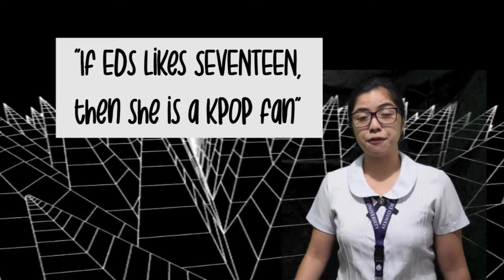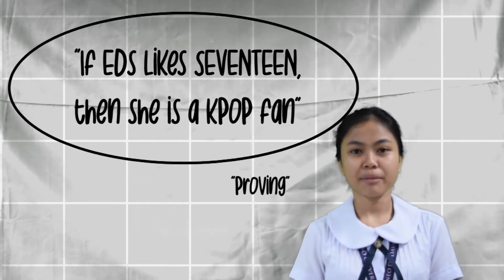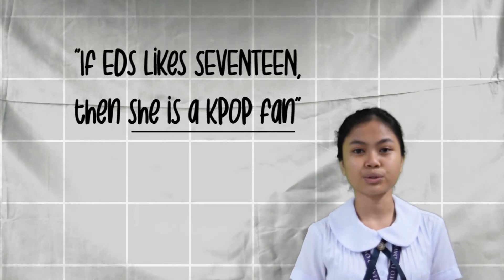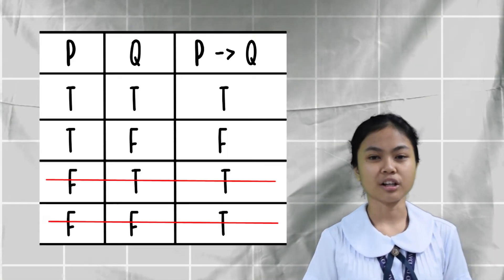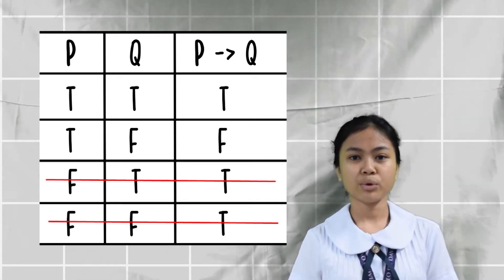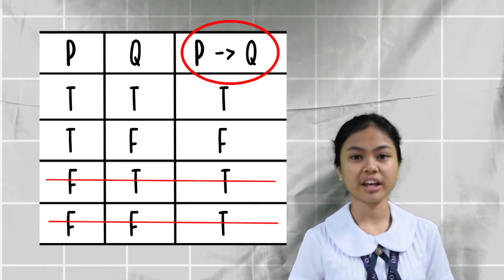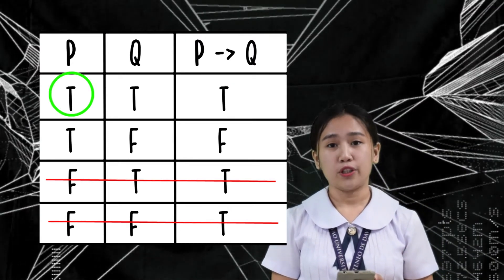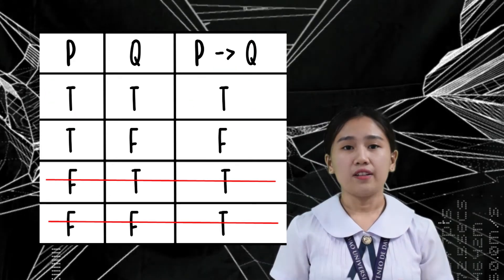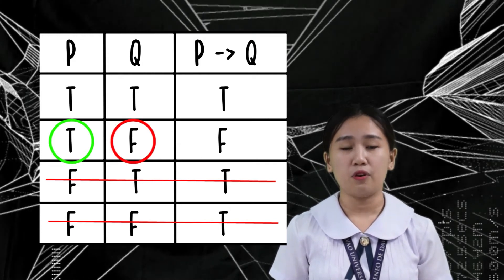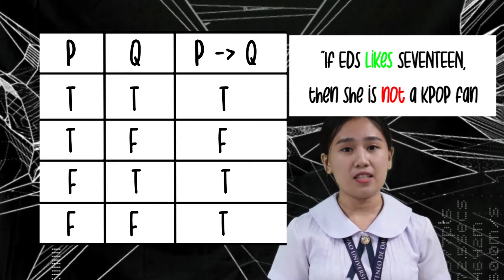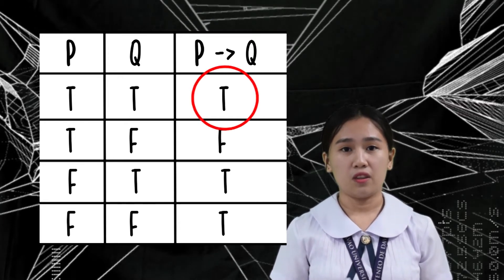For example: if Edz likes 17, then Edz is a K-pop fan. We prove this statement using direct proof by first stating that Edz likes 17, which is true, and second, that Edz is a K-pop fan, which is also true. Looking at the truth table, we can ignore the last two columns because when we start with a false statement — such as Edz doesn't like 17, when we know she does — any conclusion we reach won't pertain to our original statement. If we start with a true P and end with a true Q, the statement is logically sound. Whereas if we start with a true P and end with a false Q — like Edz likes 17 but she is not a K-pop fan — that's impossible because 17 is K-pop. So we arrive at an illogical statement.